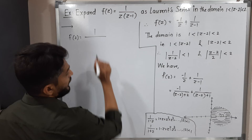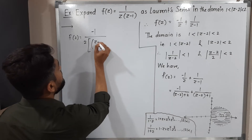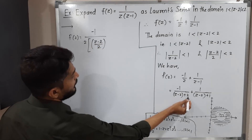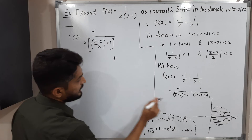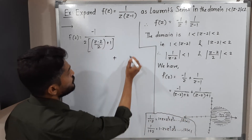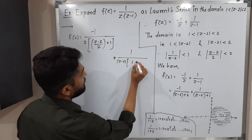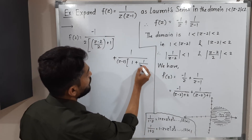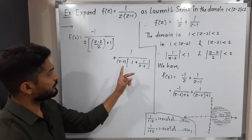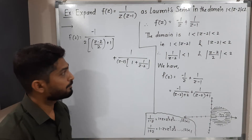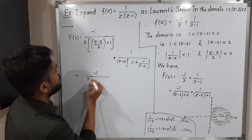So f(z) equals -1/2 times 1/(1+(z-2)/2), plus 1/(z-2) times 1/(1+1/(z-2)). We interchange terms so that 1 comes first in each bracket. Now we check: can we apply the expansion 1/(1+w) = 1 - w + w² - ⋯ to each?